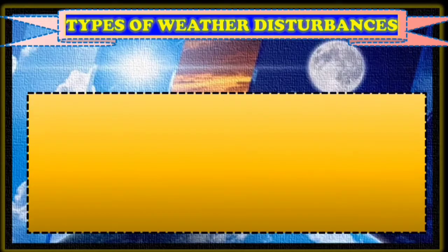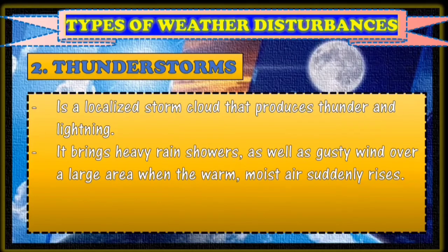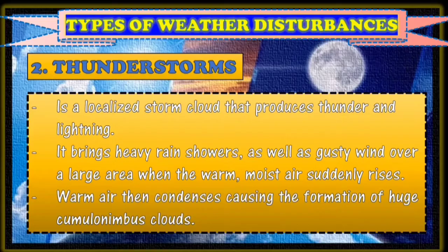Number two type of weather disturbance is thunderstorm. It's a localized storm cloud that produces thunder and lightning. It brings heavy rain showers as well as gusty winds over a large area when warm, moist air suddenly rises. Warm air then condenses, causing the formation of huge cumulonimbus clouds.